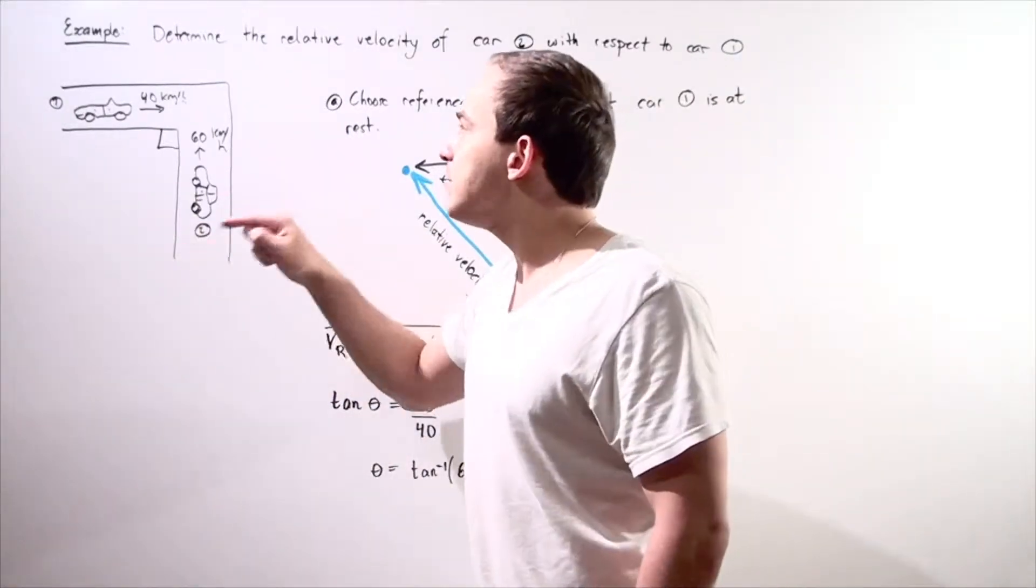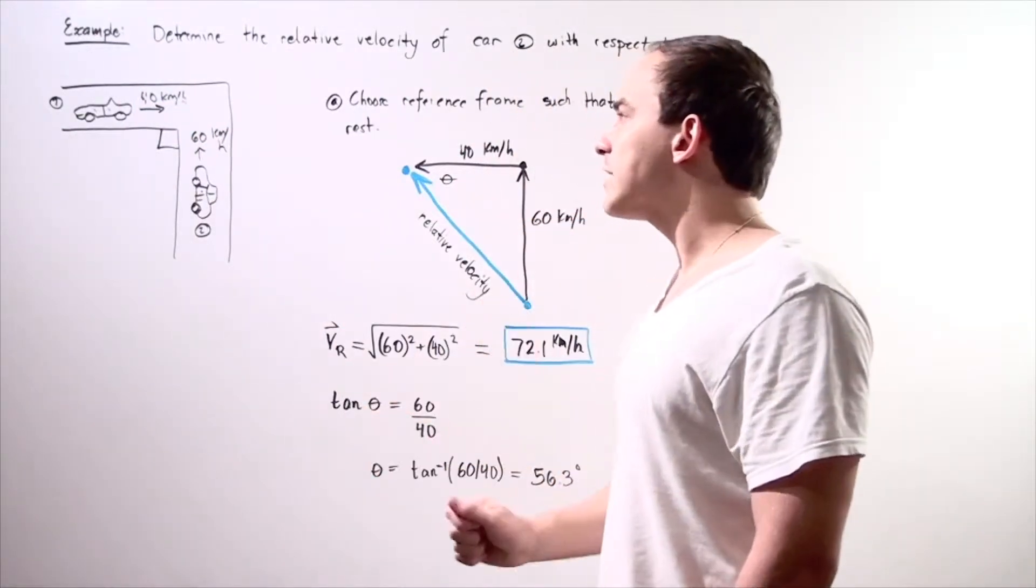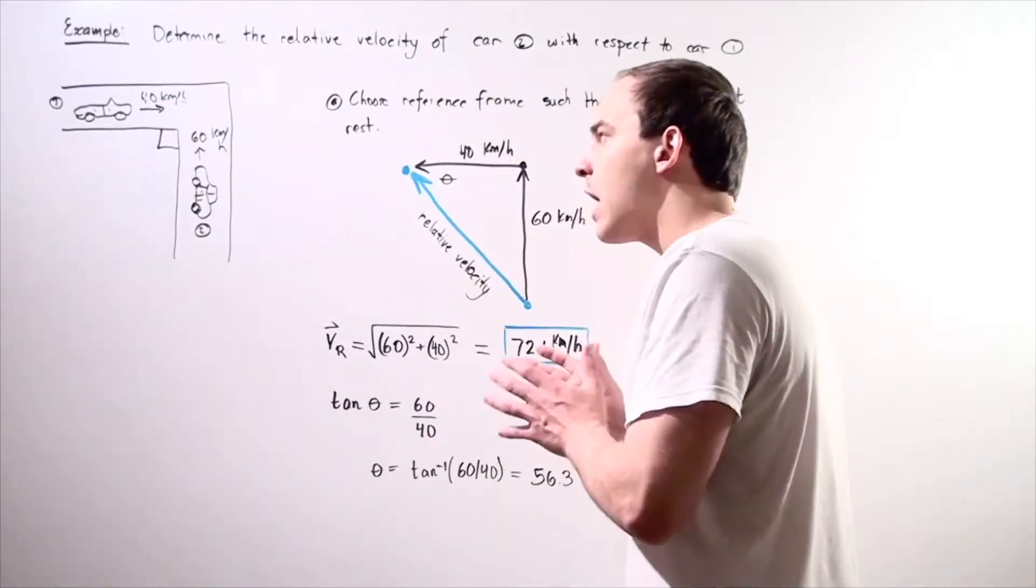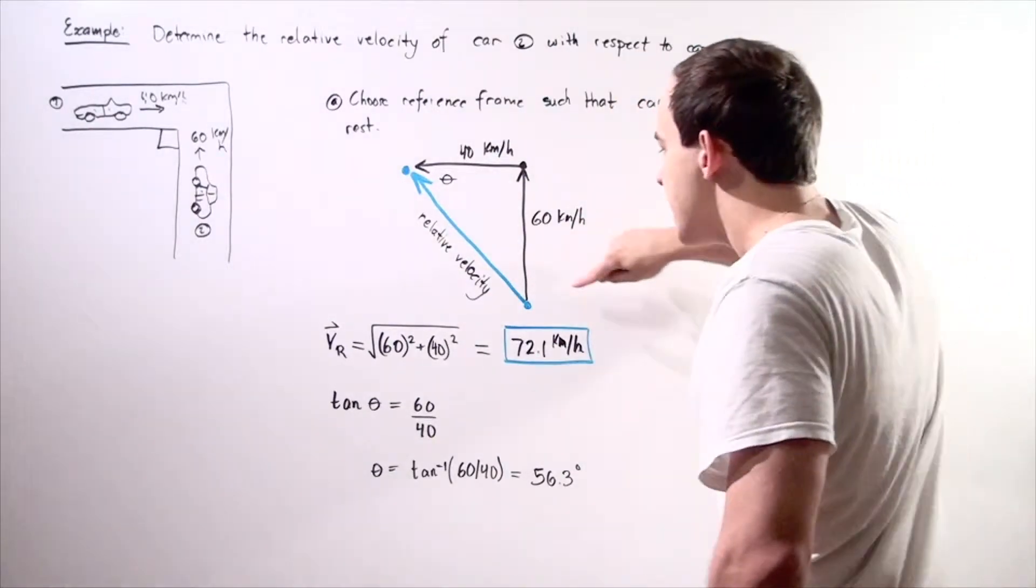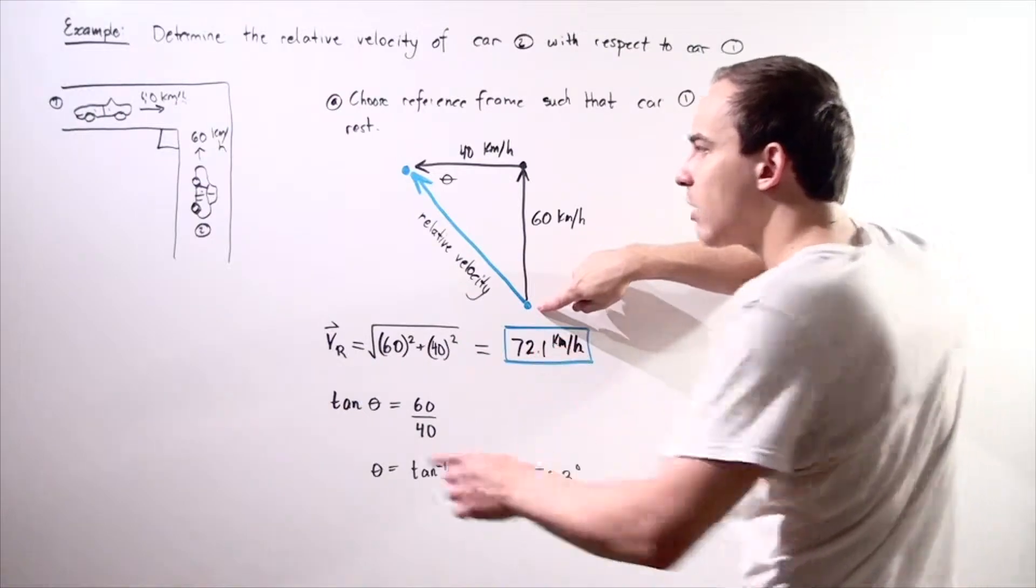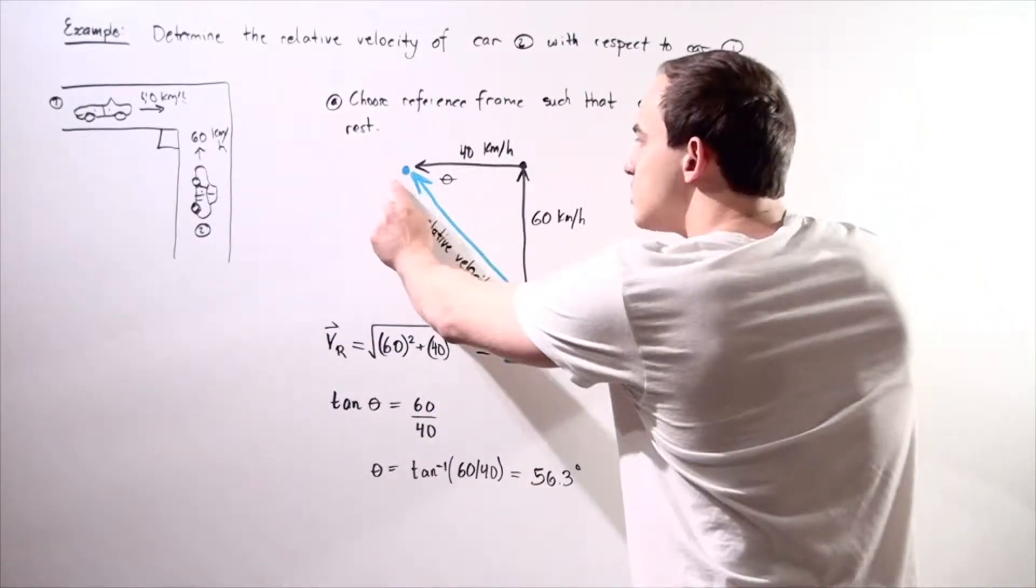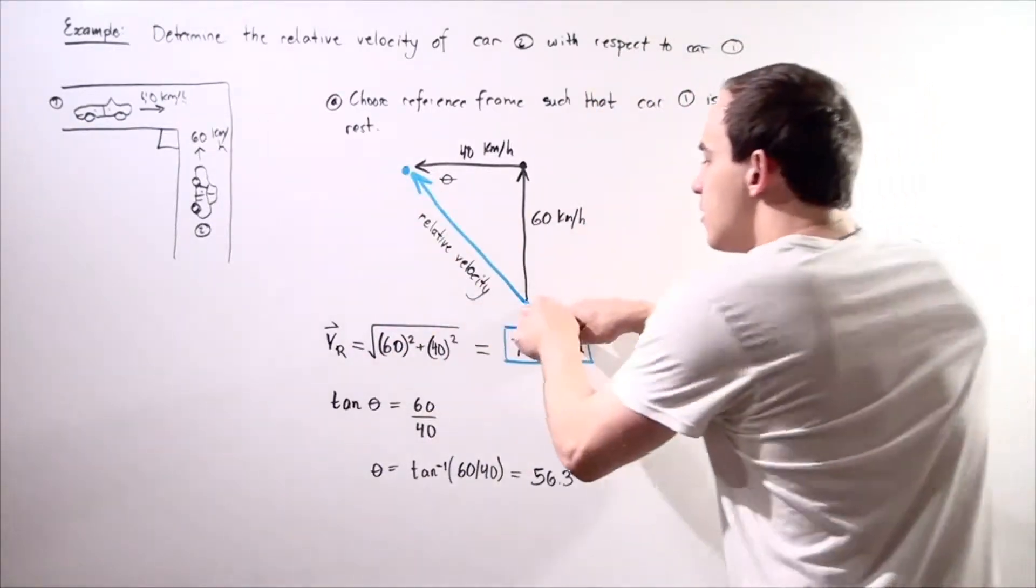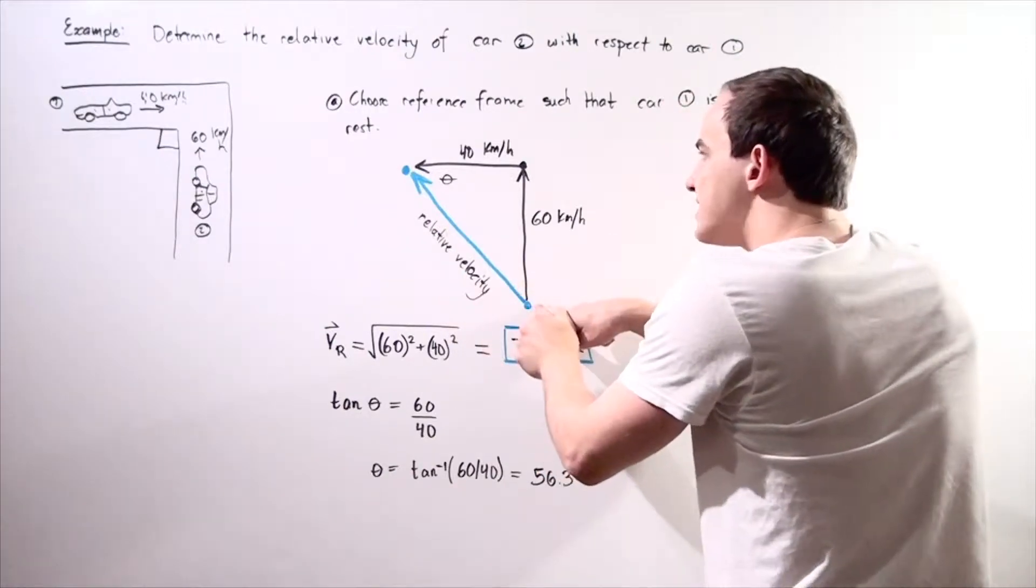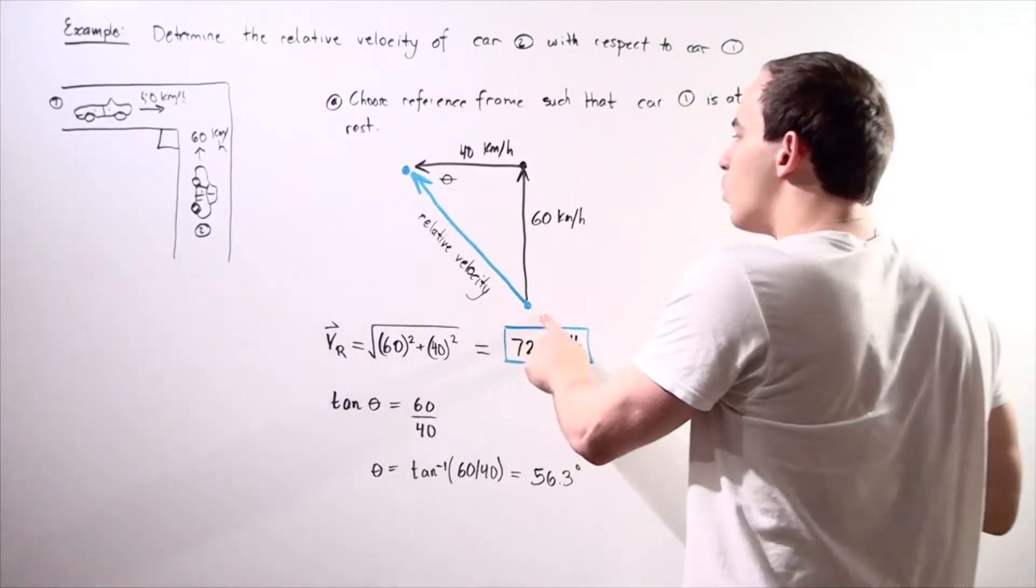So if we are to draw our vector diagram we get the following picture. So here's our moving object car two and here's our assumed to be stationary object, object one, car one, and this is the relative velocity that we want to find.